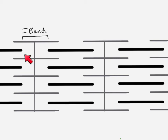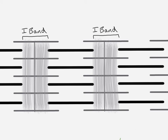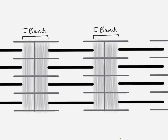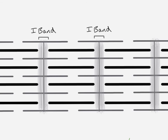The I-band is the region where you only have actin. It is also known as the light band — because actin is the thinner filament, this area looks lighter under the microscope. When the muscle contracts and actin slides across the myosin, the I-band gets smaller. In the relaxed state the I-bands are longer; in the contracted state they are shorter.